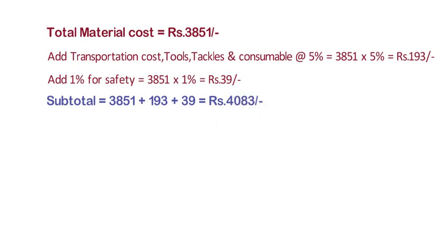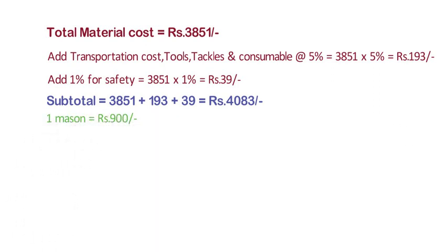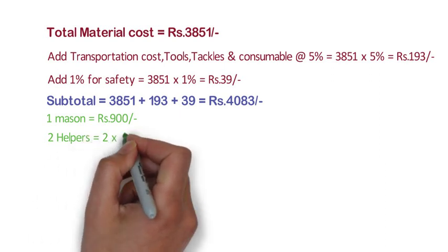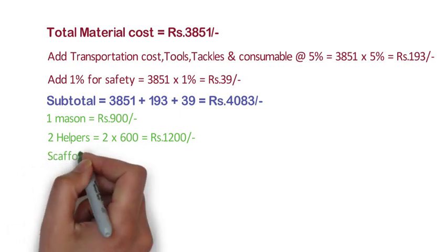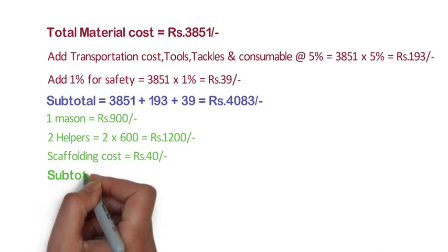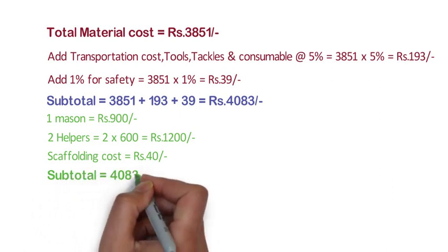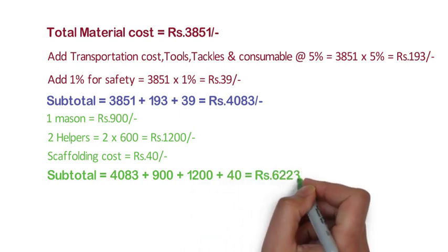Now the labor part. Generally 1 mason and 2 helpers are required to complete 1 cubic meter of brick masonry in 8 hours. Consider a rate of 1 mason for 8 hours at 900 rupees, and 2 helpers for 8 hours: 2 x 600 is equal to 1200 rupees. Consider a scaffolding cost of 40 rupees. Please note that these labor rates and scaffolding cost may change as per location and type of project. Now the subtotal is 4083 plus 900 plus 1200 plus 40 is equal to 6223 rupees.